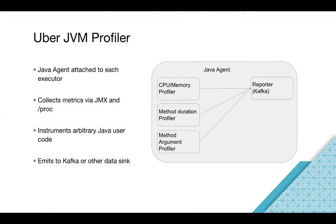Once we have the profiler collecting metrics, we can send those metrics to different places. Internally we use Kafka a lot, so we use Kafka as a data sink by default. It also supports printing to console output so you can check your local files. And it is extensible — the reporter is an interface, so you can implement your own reporter. For example, if you have a database, you can write a new reporter to save data there, and hook it up with your application.